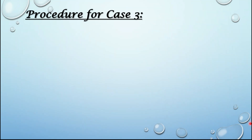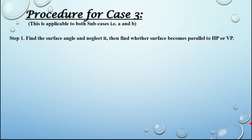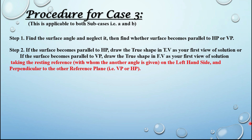Now let us look at the procedure. It remains the same for both sub-cases A and B. Step one: find the surface angle and neglect it, then find whether the surface becomes parallel to HP or VP — that is, determine whether the surface angle is theta or phi. Step two: if the surface becomes parallel to HP, draw the true shape in the top view as your first view of the solution, taking the resting reference — with whom the other angle is given — on the left-hand side and perpendicular to the other reference plane.